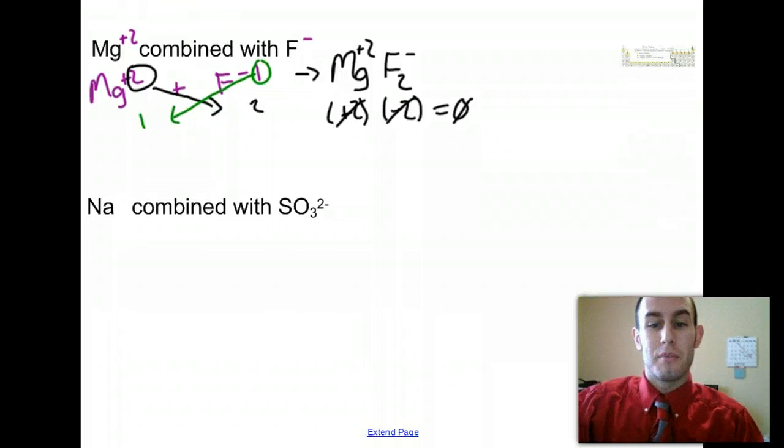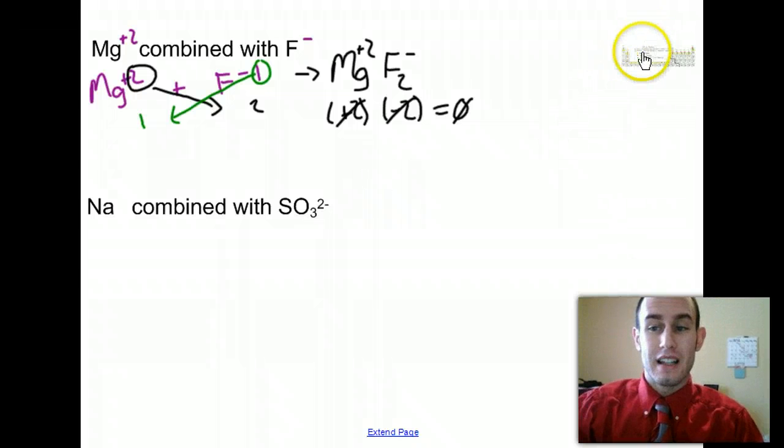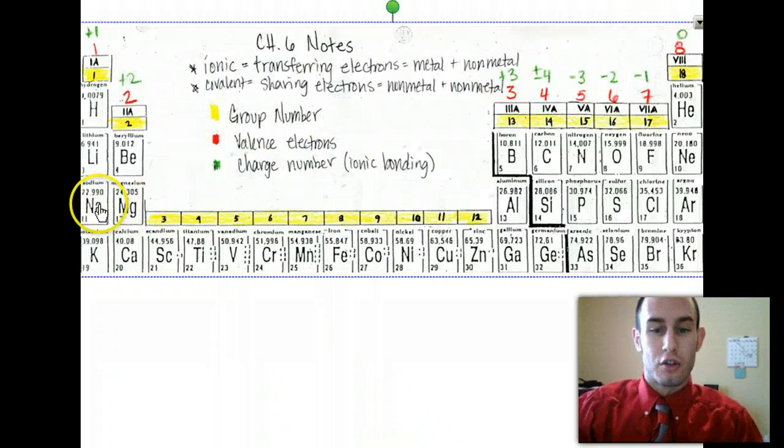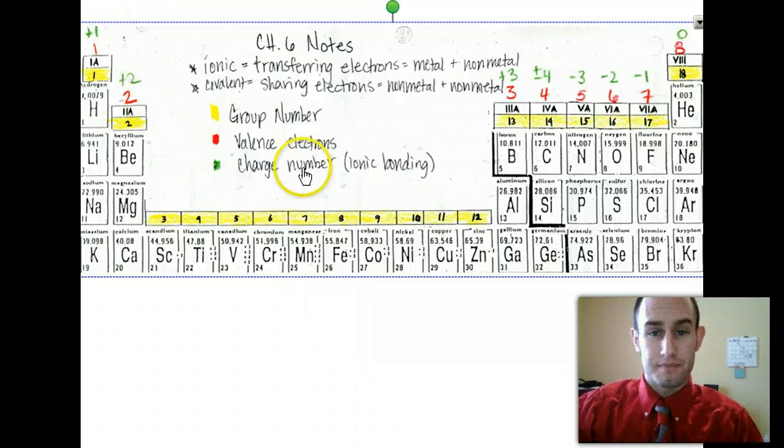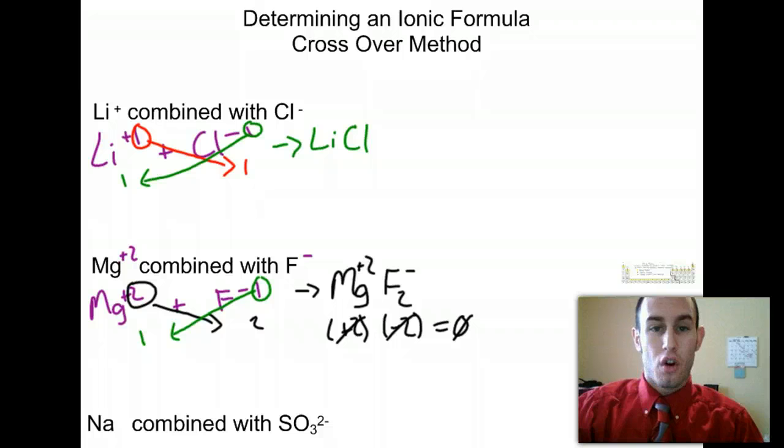We're going to look at sodium combined with SO32 minus. You should recognize this as sulfite, one of the polyatomic ions you must know. Again, sodium is group 1A, so it's going to be plus one on its charge.